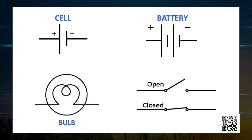All these elements used in a circuit — like a connecting wire, ammeter, voltmeter, switch, electric bulb, etc. — have conventional symbols. You can see them on the screen.